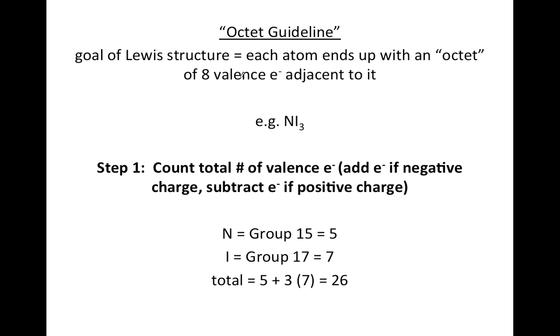The main goal in drawing a Lewis structure is generally to follow the octet guideline. We'll talk about some exceptions in a separate video, but the goal is to end up with eight valence electrons adjacent to every atom in your Lewis structure. Let's do the example nitrogen triiodide and go through the steps you would follow to draw the Lewis structure.